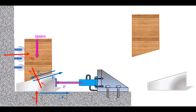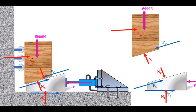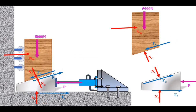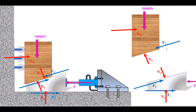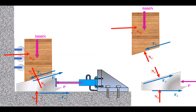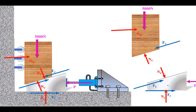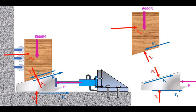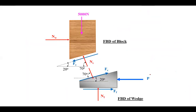Let us draw the free body diagram separately for each body. As the wedge moves left, friction forces act right. Relatively the block moves right compared to the wedge, so friction on the block acts left. Normal reactions are always inward, and the applied force P needs to be determined.